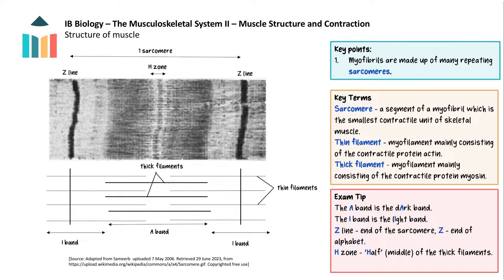As we delve further into the structure of skeletal muscle we now need to look at the sarcomere, the smallest contractile unit of skeletal muscle. Sarcomeres are repeating segments of myofibrils responsible for muscle contraction. A sarcomere runs from one Z-line to the next and is made up of many protein filaments running in parallel. Some filaments are thick filaments mainly made of myosin and some are thin filaments containing actin. The pattern of light actin and darker myosin in the sarcomeres gives the striations of skeletal muscle, as seen in this photomicrograph.